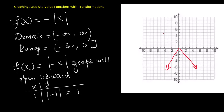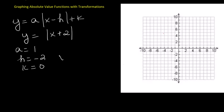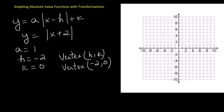Let's look at the general form of the absolute value function, which is y equals a times the absolute value of x minus h plus k. This form lets us see how the graph is transformed. For our example, the function is y equals the absolute value of x plus 2. Here, a equals 1, h equals negative 2, and k equals 0. That means the vertex, which is the point h comma k, is at negative 2 comma 0. We place this vertex on the coordinate plane.